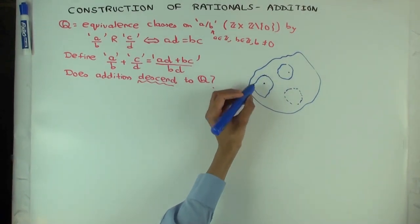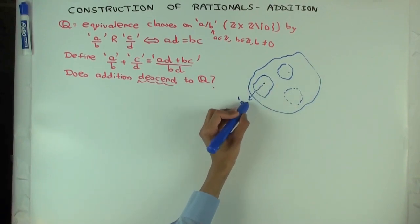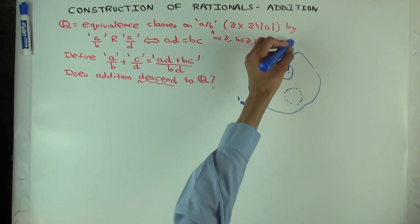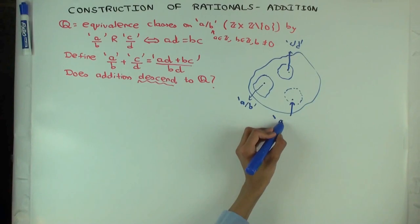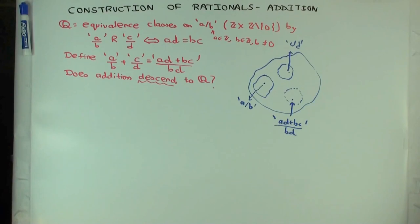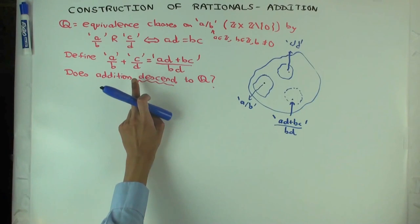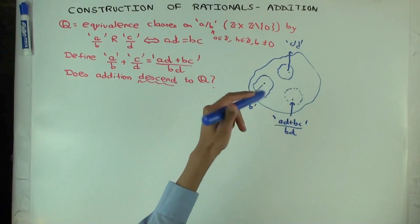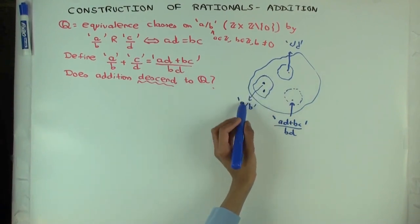So suppose I have the equivalence class of a by b. Here's the element quote a by b. Here's the element quote c by d. And here is the element quote ad plus bc over bd. Now what's the problem with just saying I just defined this as directly as addition of rational numbers? Well, remember rational numbers are just equivalence classes. Now the question is, suppose instead of quote a over b, I picked some other element which is in the same equivalence class.